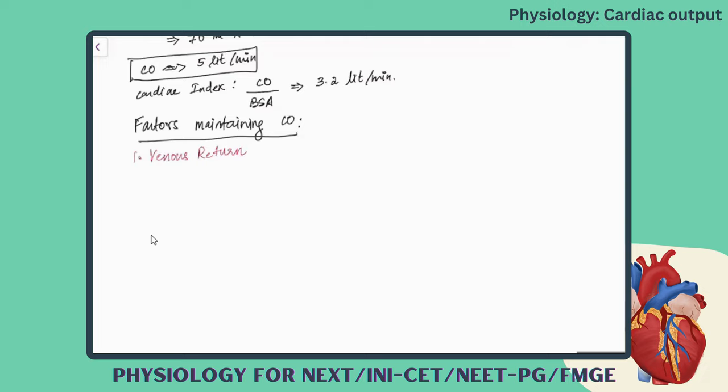If there is any abnormality in venous drainage, the amount of blood entering the atrium will not be normal. That will have a reflection in the cardiac output, because whatever blood the atrium gives to the ventricles — that volume of blood given by the atrium enters into the systemic circulation. If the atrium is not getting enough blood, normal required amount of blood is not given, and that will not give you a normal cardiac output.